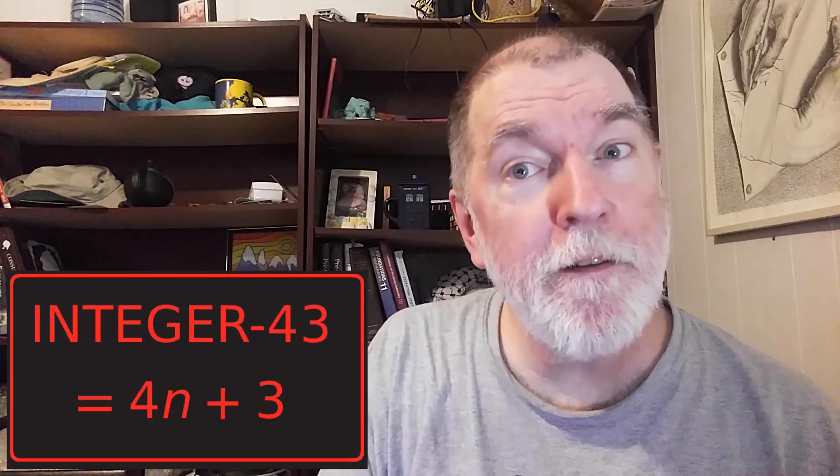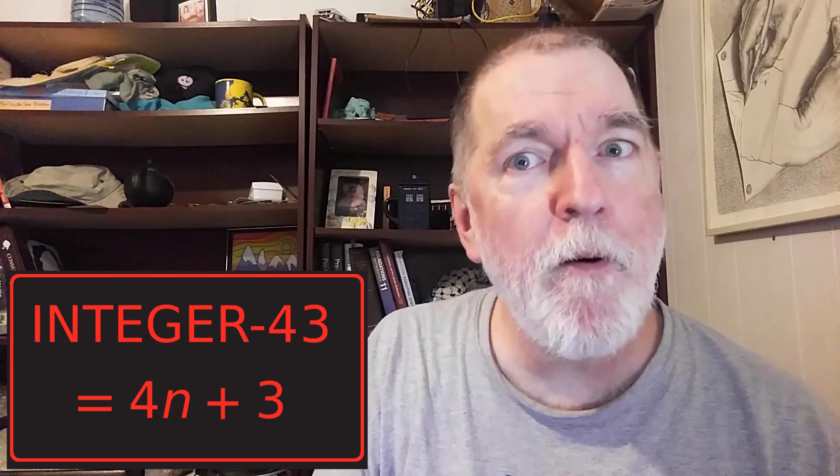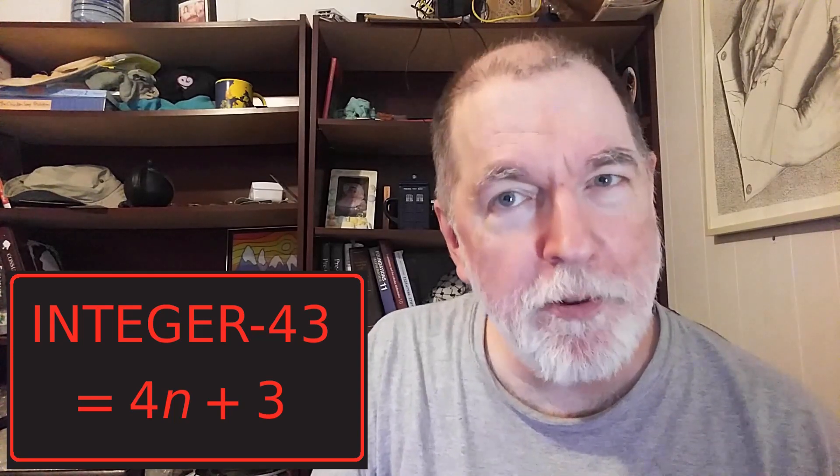We can tell if an integer is divisible by four by looking at its last two digits. If they're divisible by four, the whole integer is divisible by four. An integer ending in four, three will be divisible by four, but with a remainder of three.